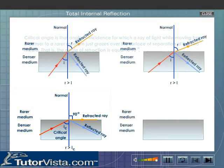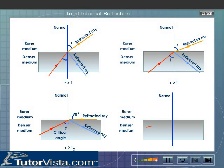If we further increase the angle of incidence, the light ray, instead of getting refracted, bounces back into the same medium, obeying the laws of reflection. This is known as total internal reflection.